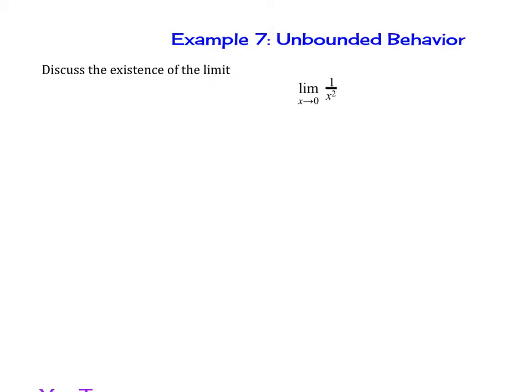We're going to look at examples 7 and 8. Example 7 has to do with unbounded behavior. Example 8 has to do with oscillating behavior. Then we're going to look at conditions under which limits do not exist.